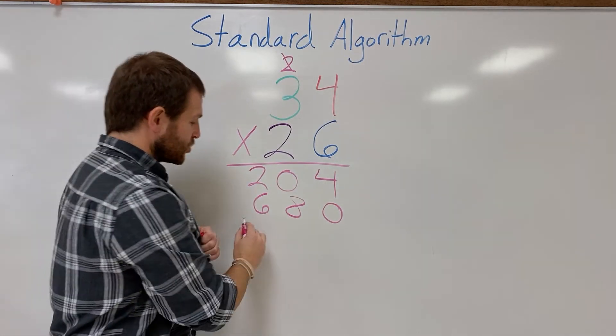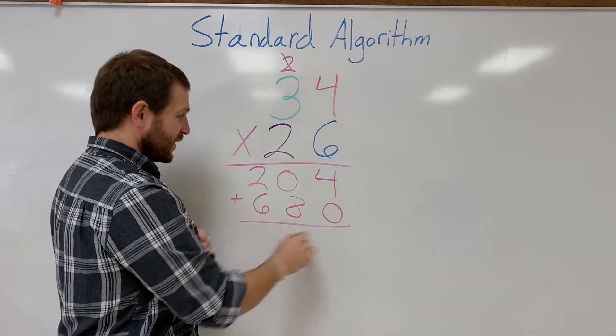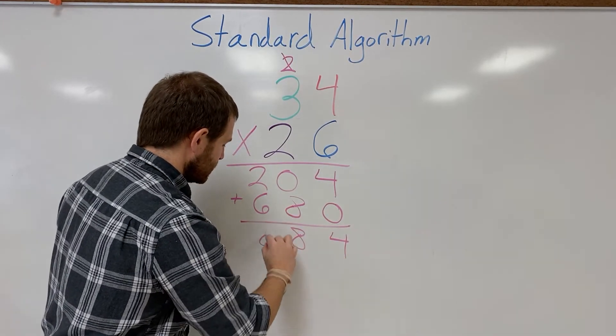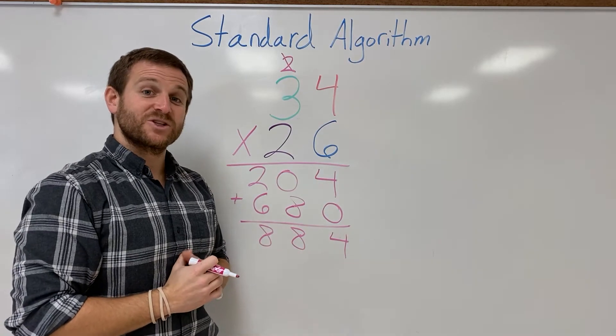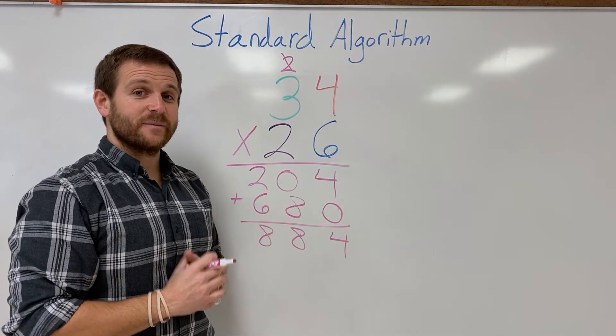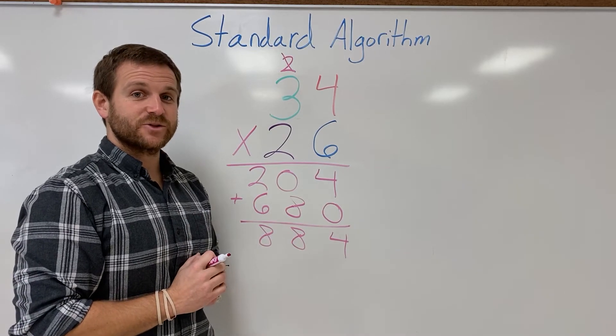These are my two partial products. I add them up: 4, 8, and 8, and I get my final product which is 884. This is the standard algorithm for double-digit times double-digit multiplication.